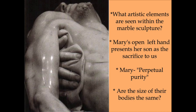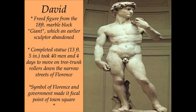Michelangelo's most famous sculpture is the David — it is 13 feet tall and took 40 men four days to move down a narrow street in Florence from his studio to where it stood outside the city hall of Florence. It faced the city of Rome because David was the symbol of Florence: the small city-state standing up against a larger power. Remember, Italy was not under unified control at this point — every city-state was independent.